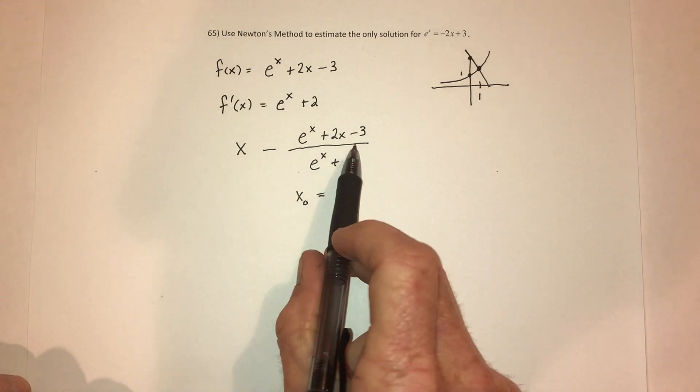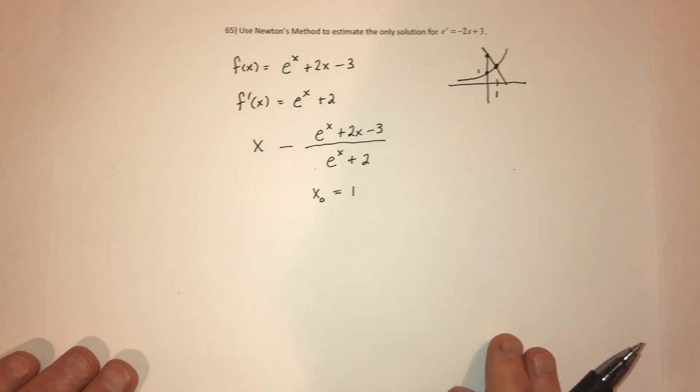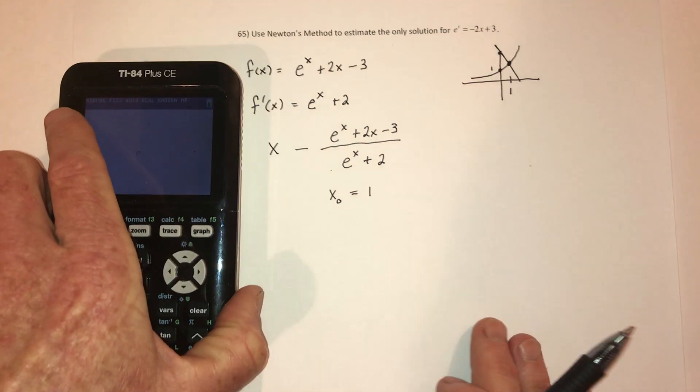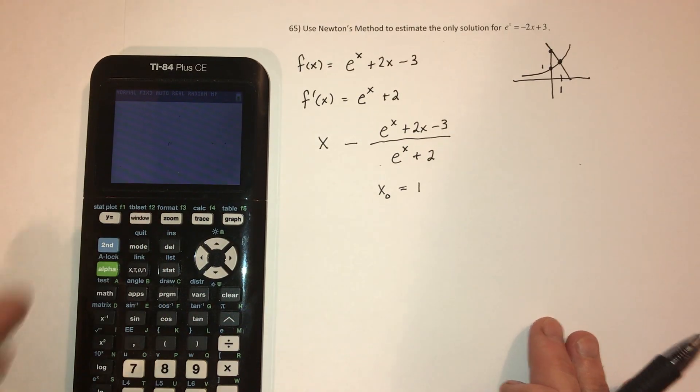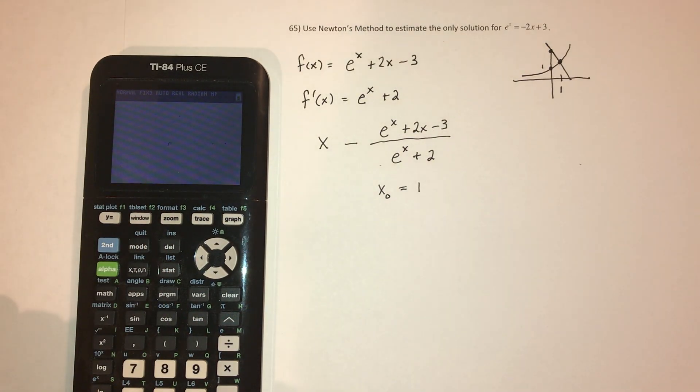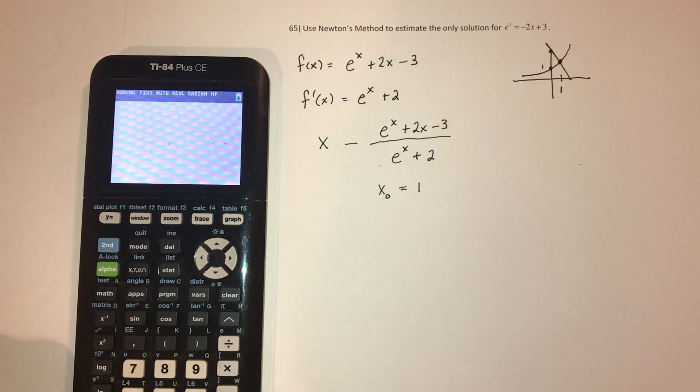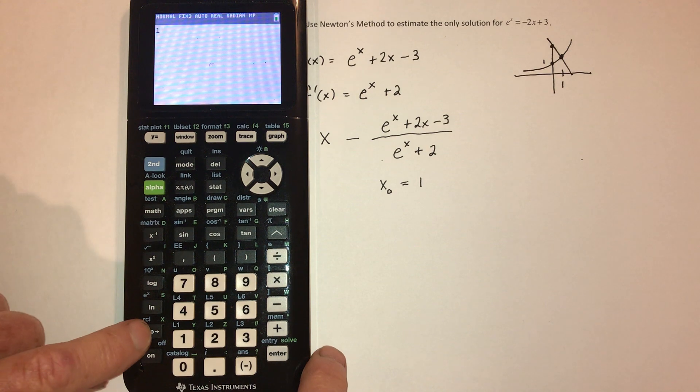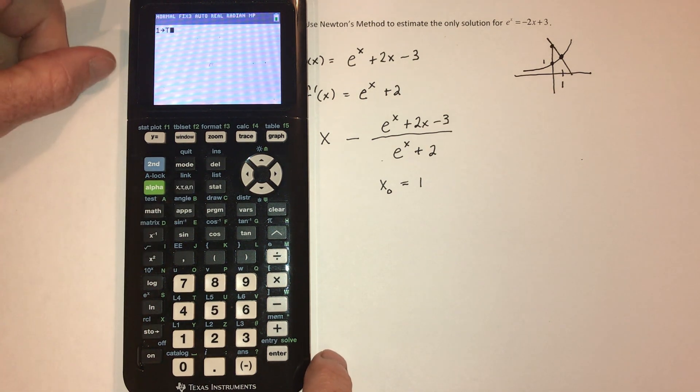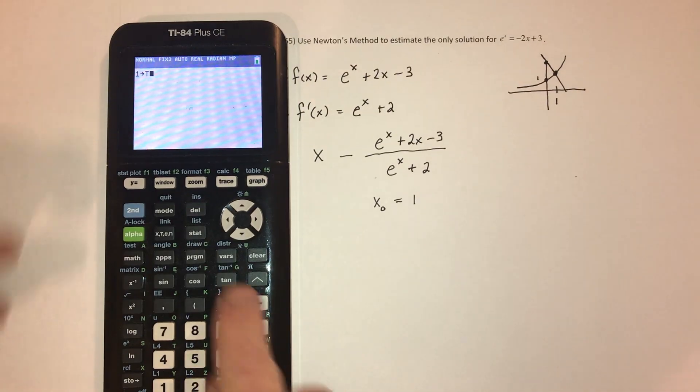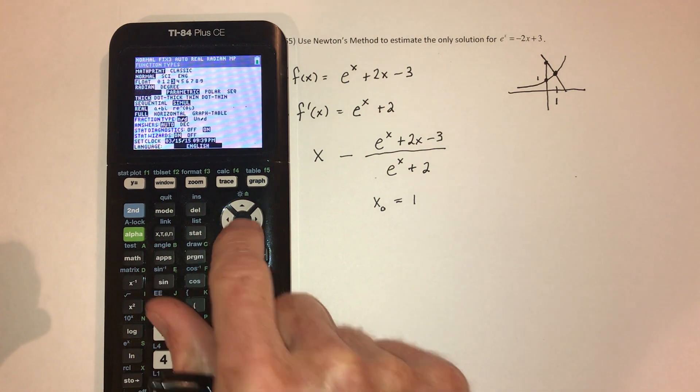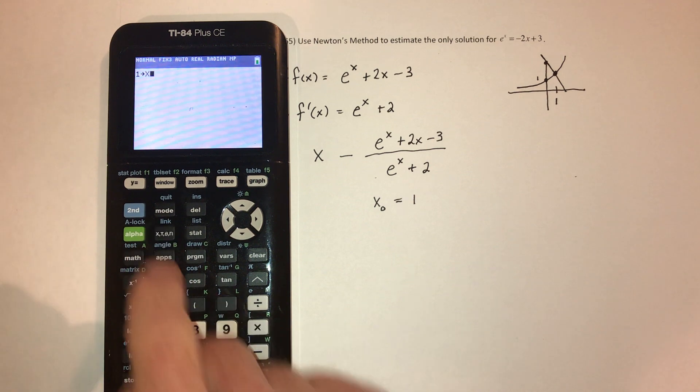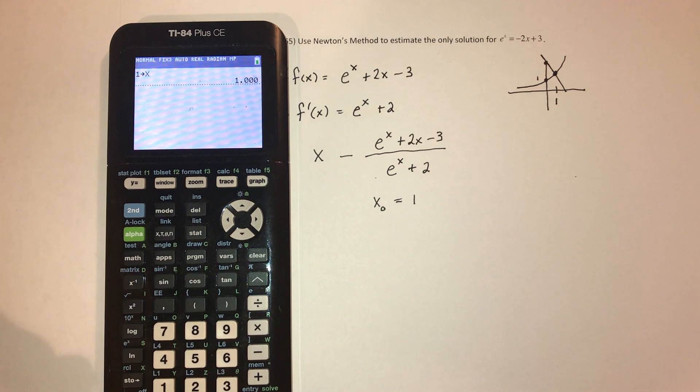Now plug in a 1 for x. And of course, the easiest way to do that is use the calculator. First of all, go 1, and then right here is store. So store that as x. My calculator's in the wrong mode. 1, store that as x. There we go.